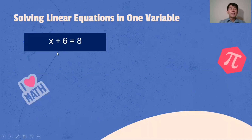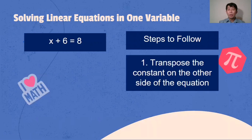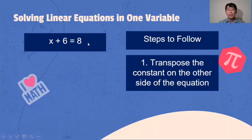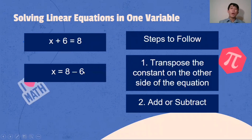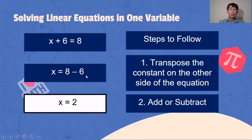Let's now try to solve linear equations in one variable. Given: x + 6 = 8. The steps to follow: number one, transpose the constant on the other side of the equation. We will be transposing 6 on the other side. Always remember, when we transpose a term, we change the sign — so from positive 6, it becomes negative 6. Then add or subtract: 8 minus 6 is 2. So our final answer is x = 2.